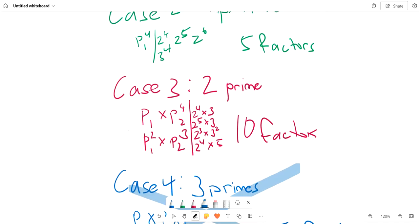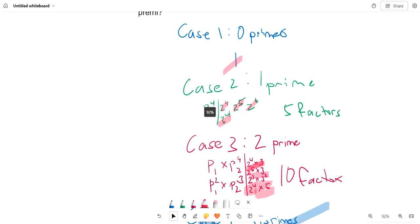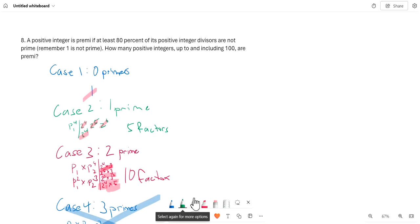So the only numbers we have left are the answers from the previous cases. Counting them up: 1, 2, 3, 4, 5, 6, 7, 8, 9. We have 9 different positive integers that are premie. The answer is 9.